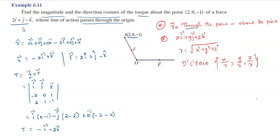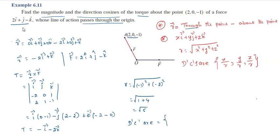Now we calculate the direction cosines. The magnitude r is equal to square root of (minus 1 squared plus 0 squared plus minus 2 squared), which equals square root of 1 plus 4, that is square root of 5. The direction cosines are: l equals minus 1 by root 5, m equals 0, n equals minus 2 by root 5. This is the magnitude and direction cosines.